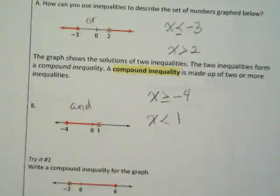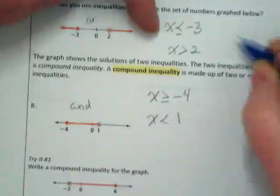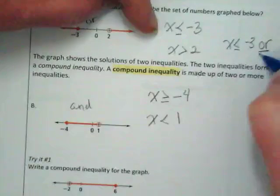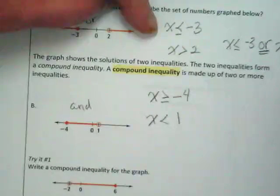So we're going to go back and rewrite these two. The first one would be written as x is less than or equal to negative 3 or x is greater than 2.